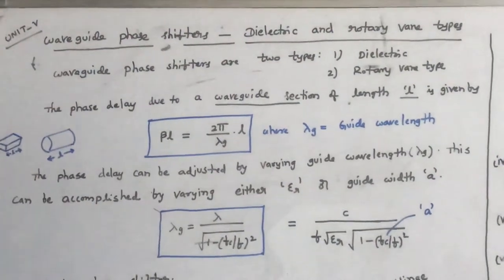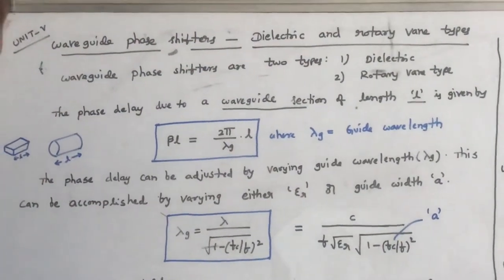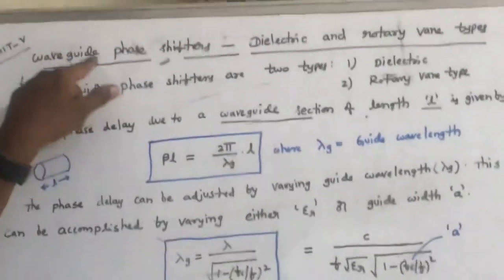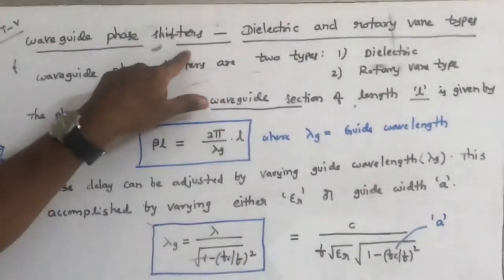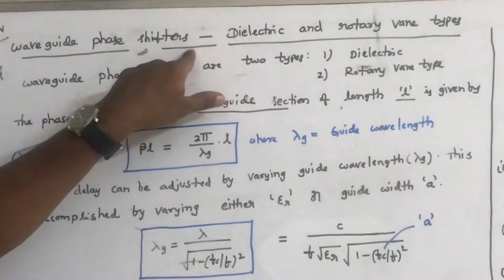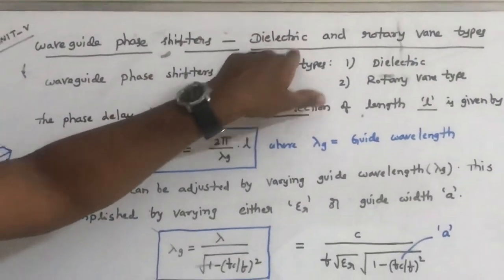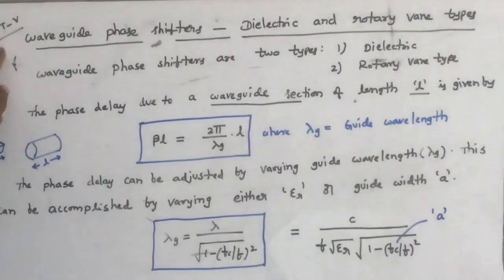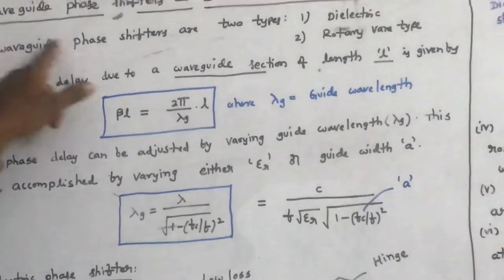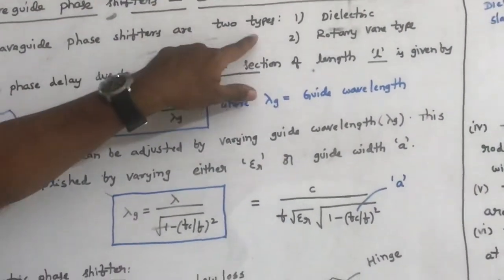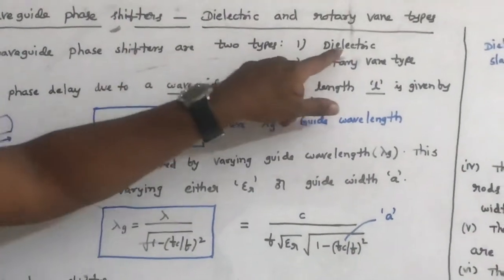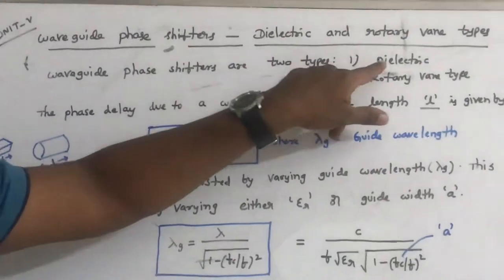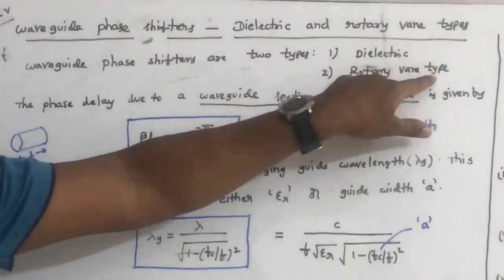Welcome to the series of video lectures on Microwave Engineering. In this section, we will see waveguide phase shifters. Under these waveguide phase shifters, we will discuss dielectric phase shifters and rotary vane phase shifters. This article comes in unit 5. The waveguide phase shifters are of two types: dielectric and rotary vane type.